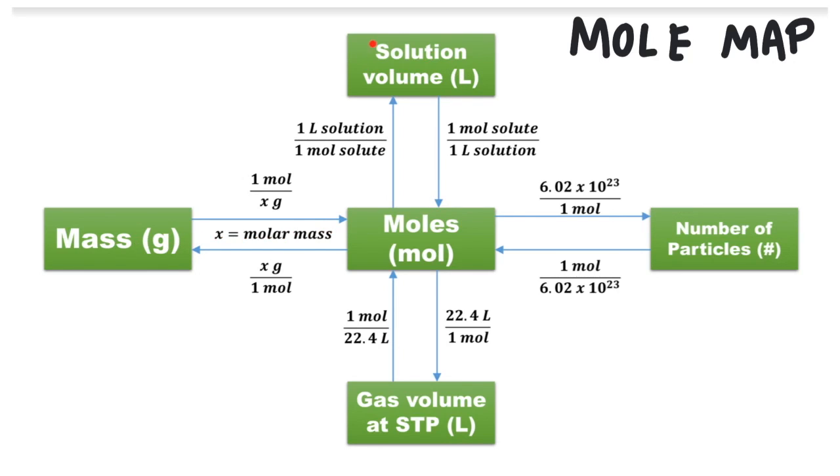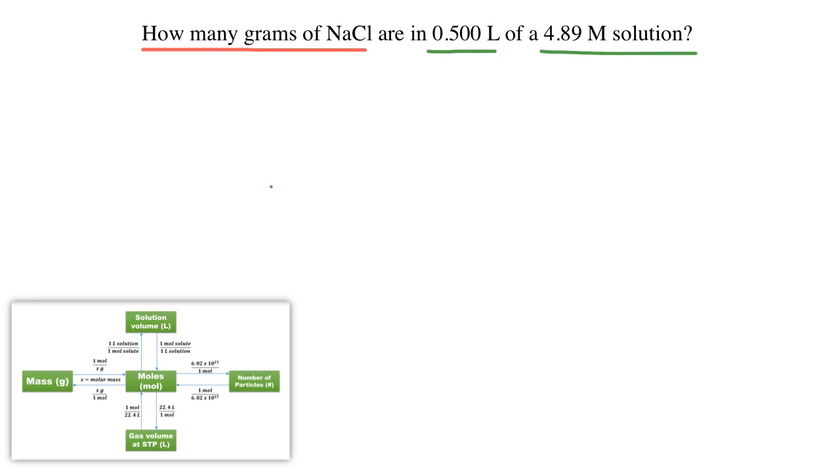So we are starting with a solution. So we are here, volume of solution. So what is the volume of solution? Well, that's the liters right here, 0.5 liters. So we want to get from volume of solution all the way over here to grams. To get to grams, we have to go through the mole. The mole is the SI unit for the amount of something. And all of these units are connected by that unit. So we are first going to convert to moles and then we'll convert to mass.